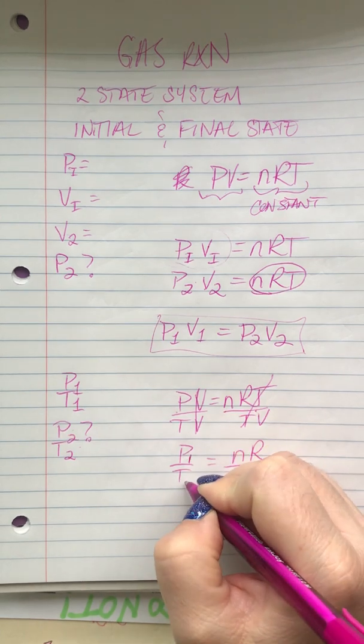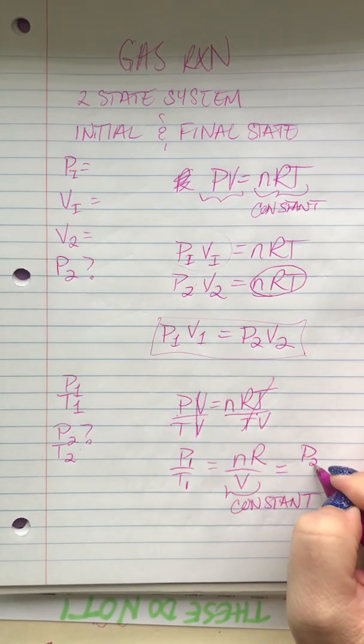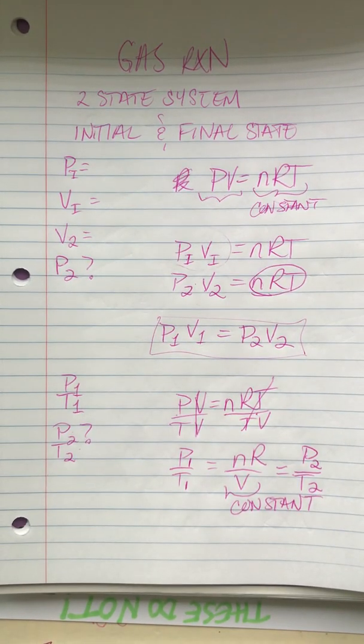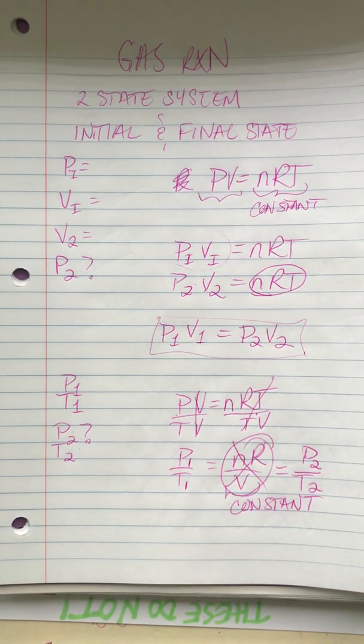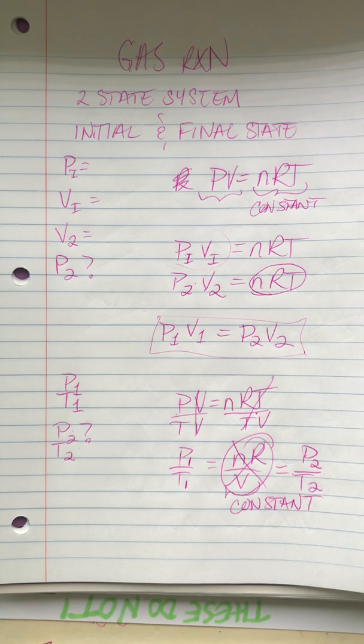So we know that P1 over T1 must equal P2 over T2. And we just cut out the middleman, because we don't need to know those guys. Does that make sense?